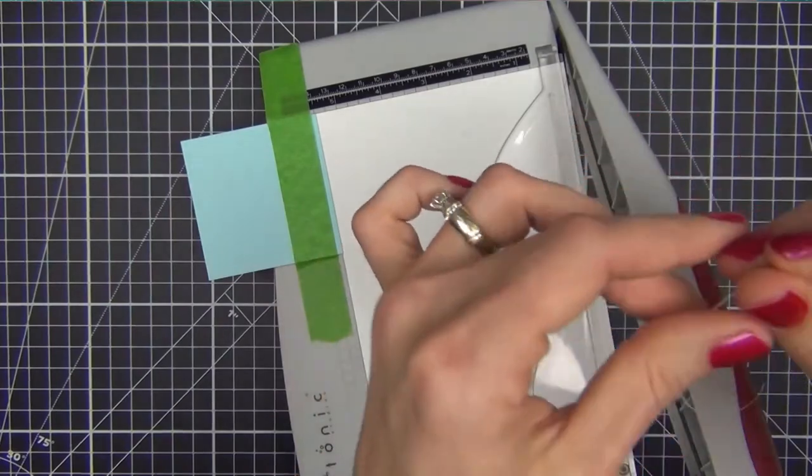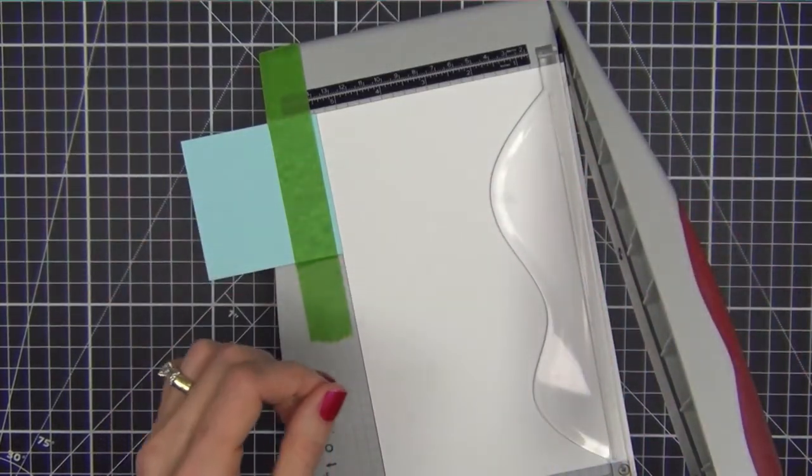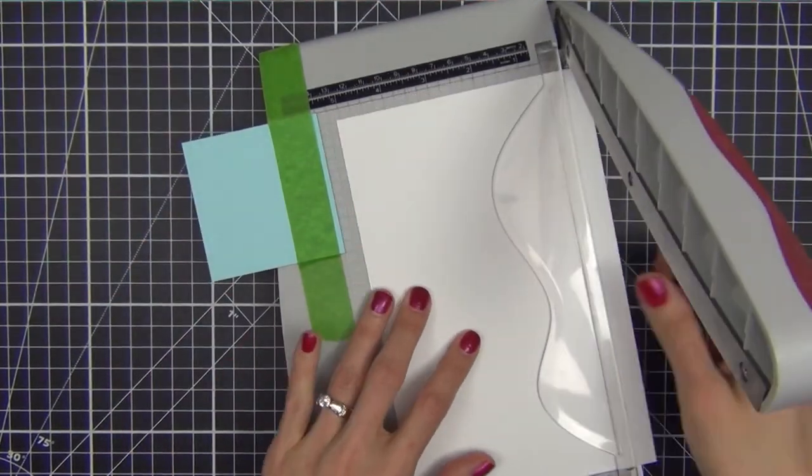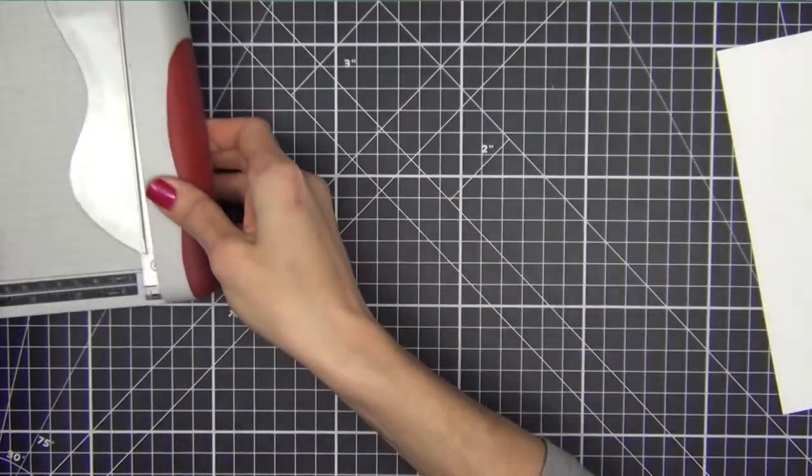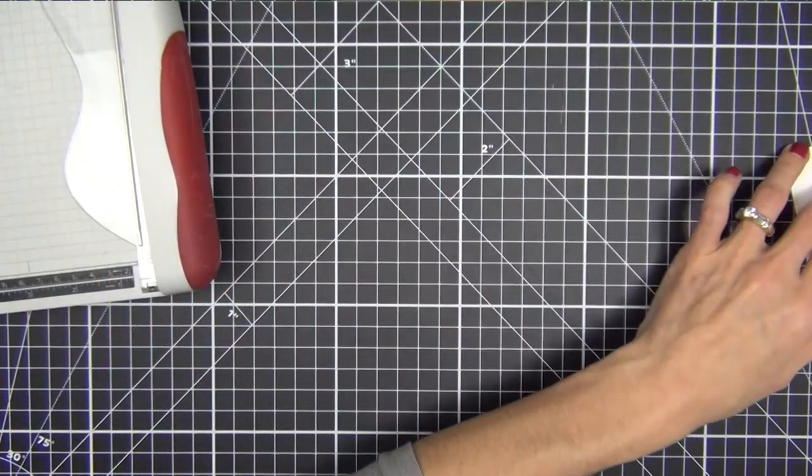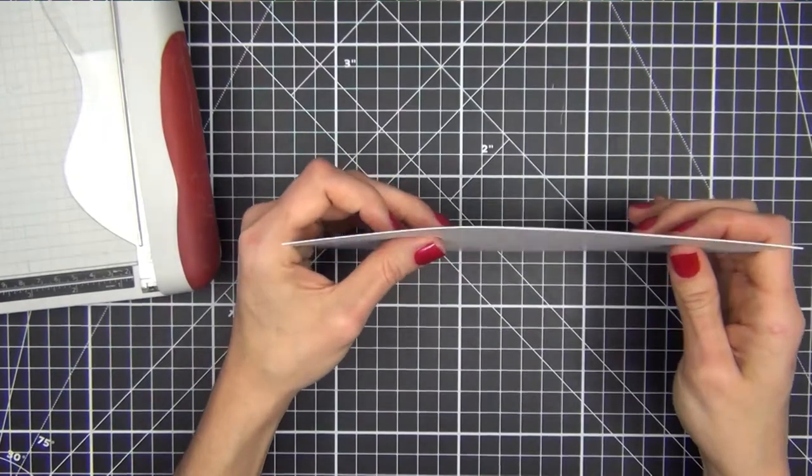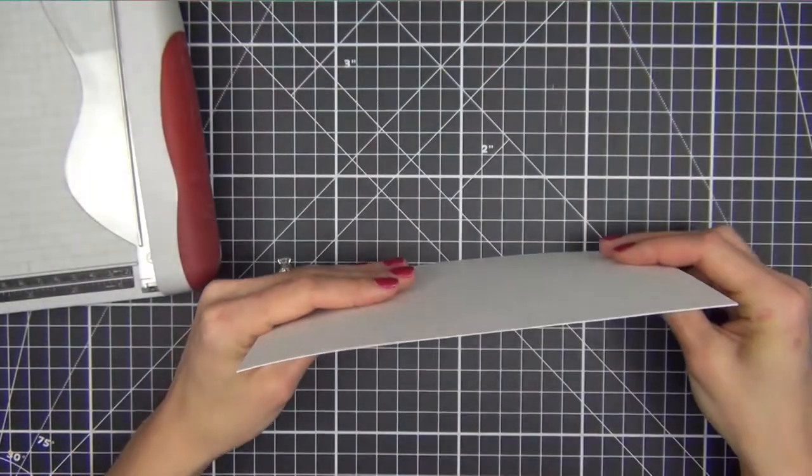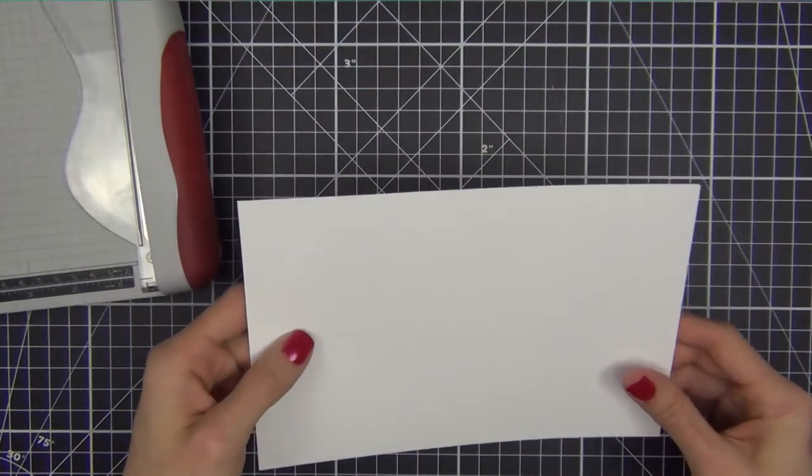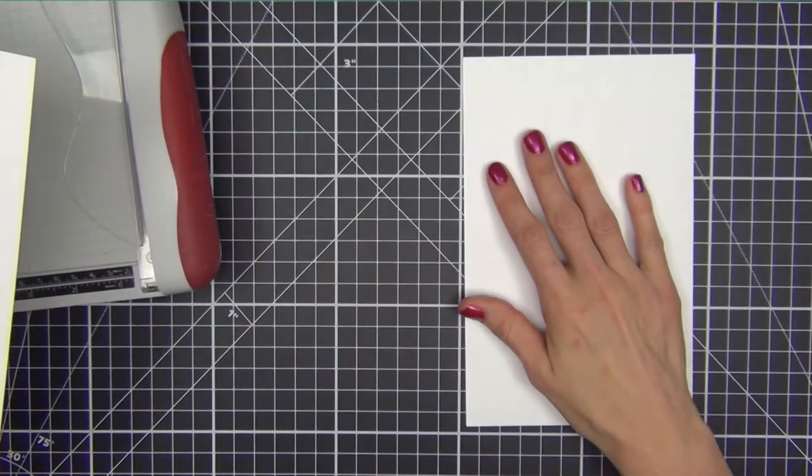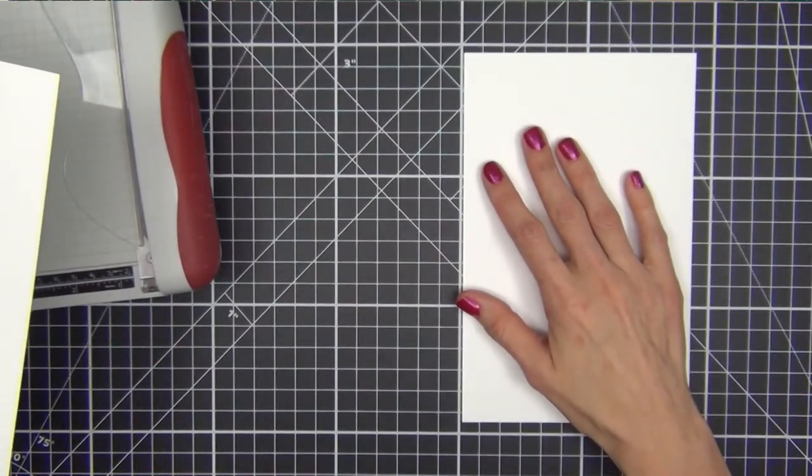Slice. It slices off that tiny bit of extra cardstock. Then lift it up. And here you go. You have two perfectly even pieces of cardstock. And you'll pretty much get it straight every time if you use that method.